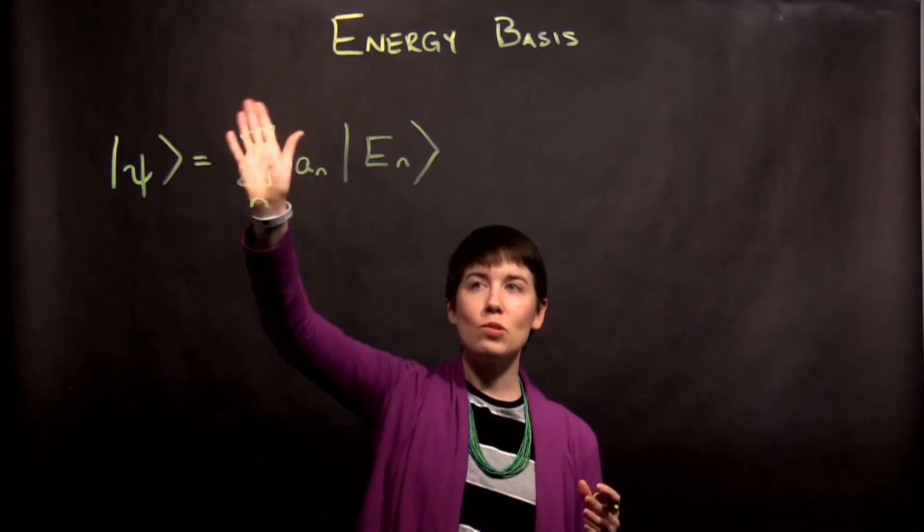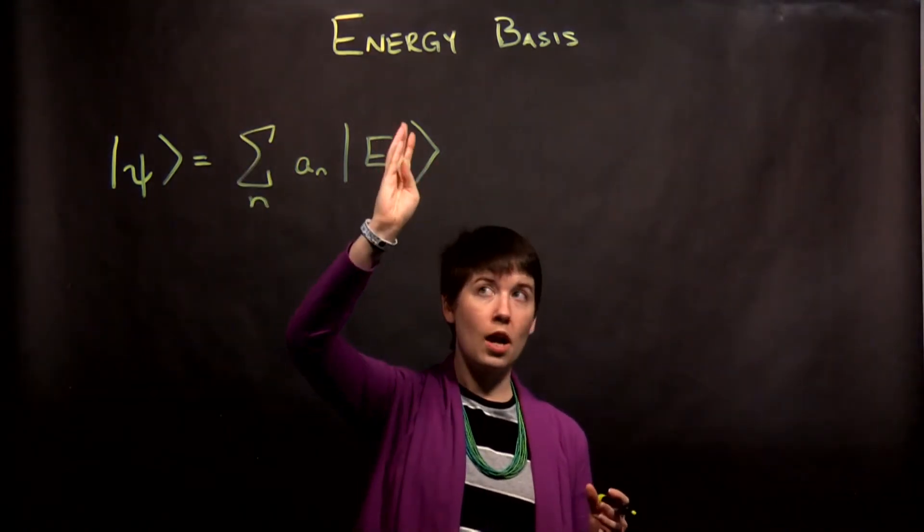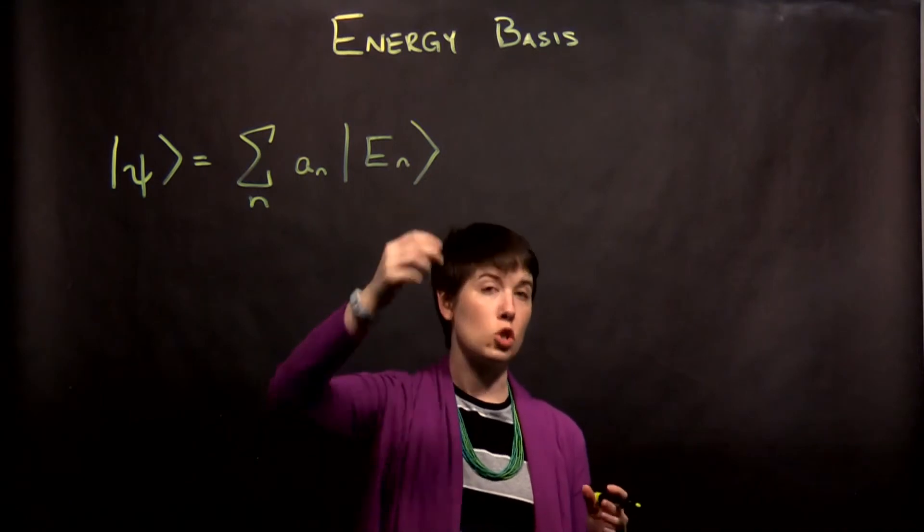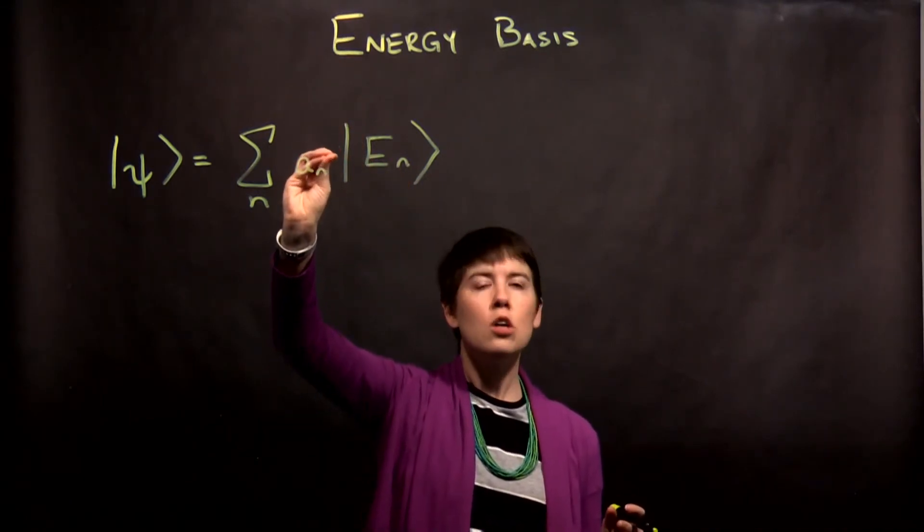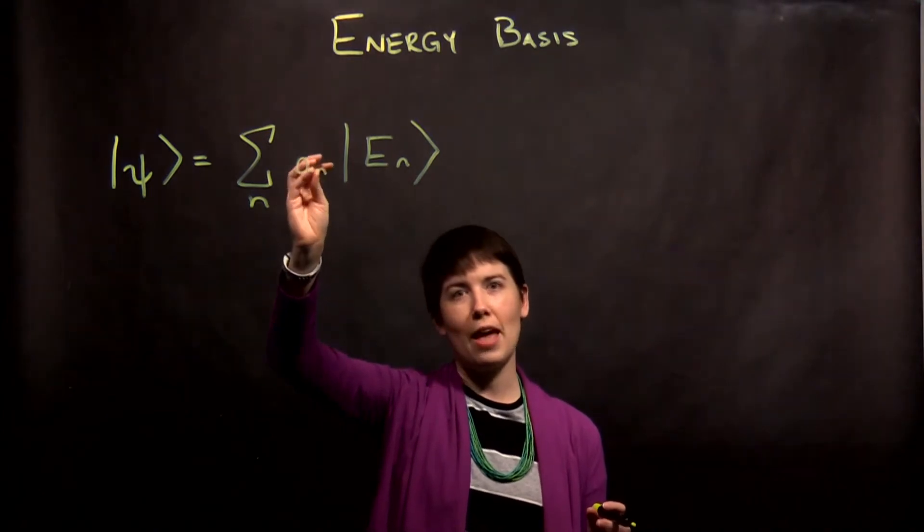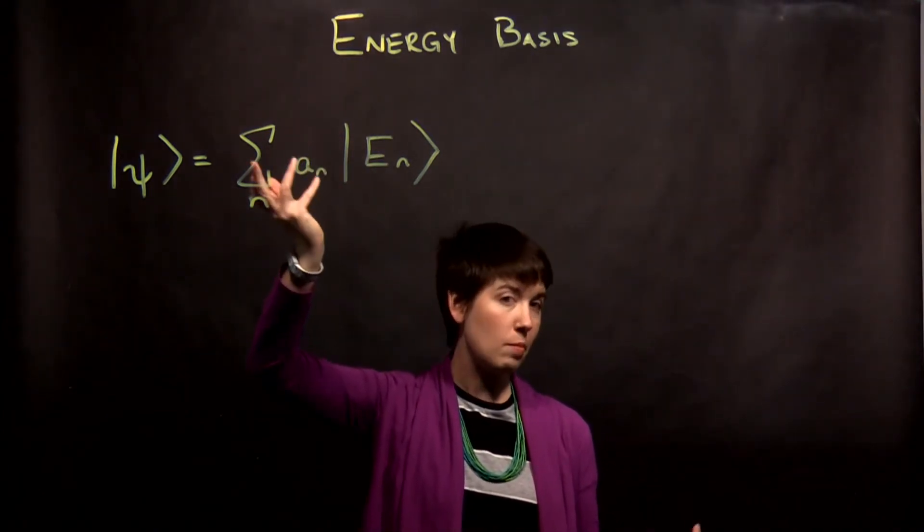We think about summing over each of our eigenstates, our basis vectors for this, which are our energy eigenstates, and we have different coefficients. These are scalar coefficients, and they might be complex, they might not be.